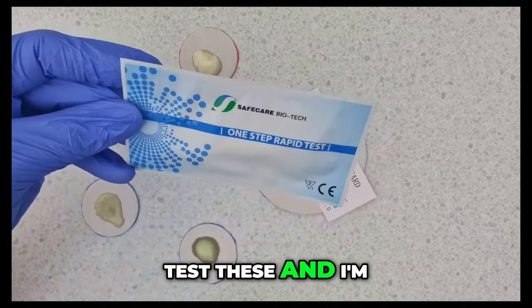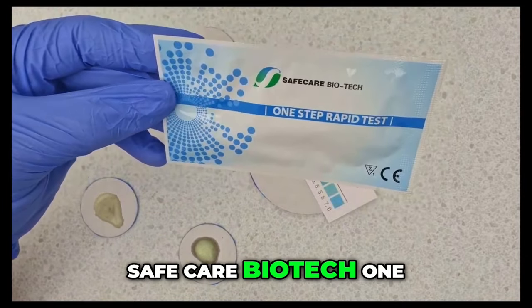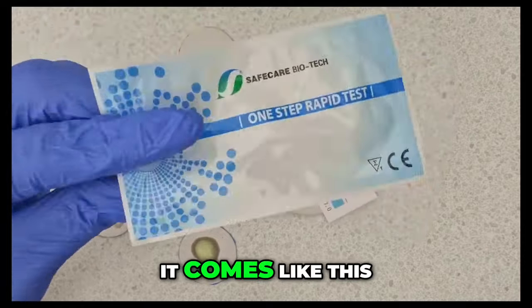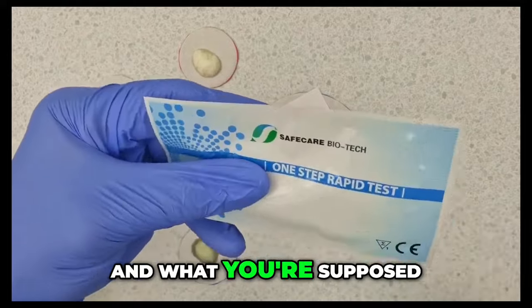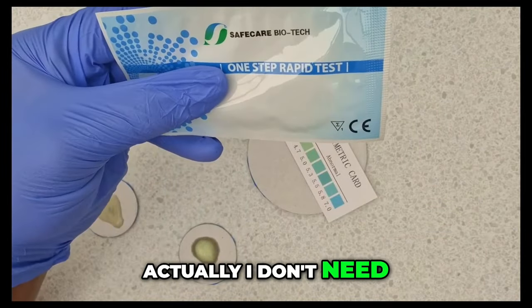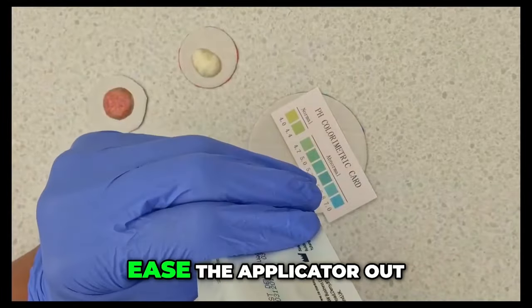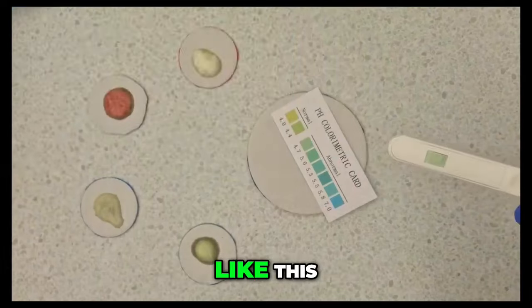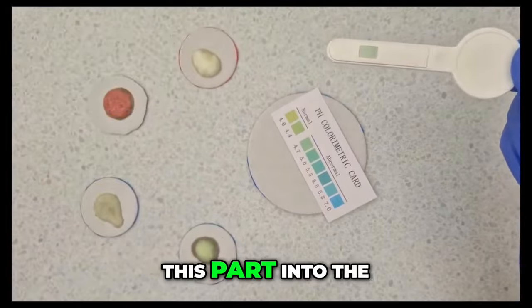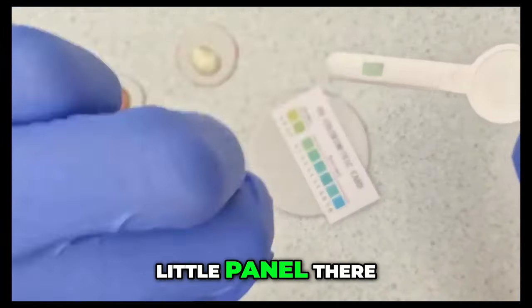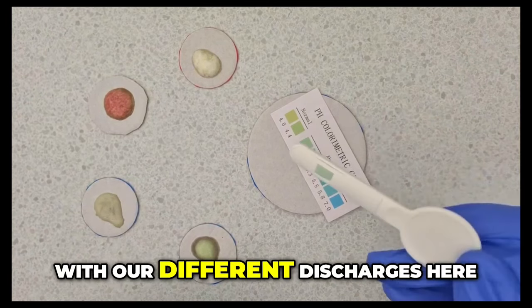So this is supposed to be a useful tool for testing your discharge. And if it does show some abnormality using the pH colorimetric card that comes with the kit, then it suggests that there might be an infection and you're supposed to go and see your doctor. So we're going to test these and I'm using this particular one for no reason at all apart from it's one of the many that you have on the internet. This is a safe care biotech one-step rapid test. So you can open this very simply and ease the applicator out. Held like this you're supposed to introduce this part into the vagina and moisten that little panel there with whatever discharges within the vagina. So that's what we're going to do now with our different discharges here.